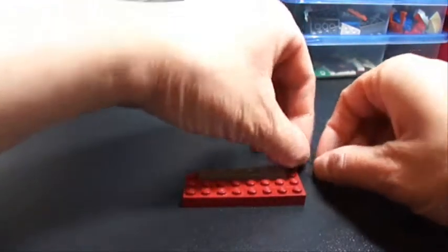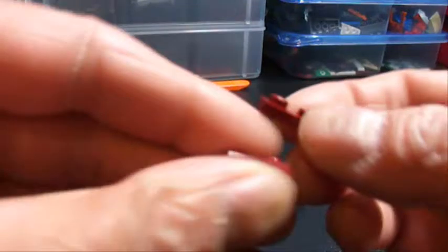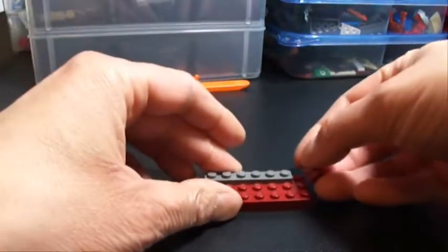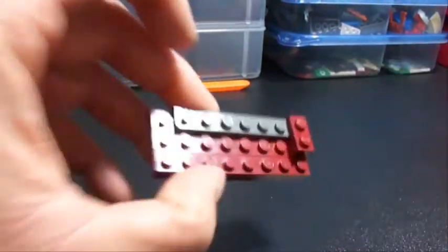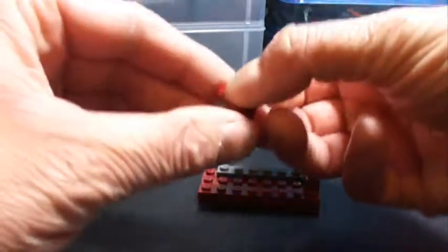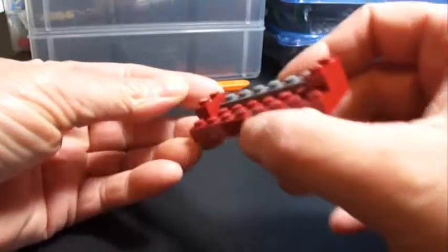Then we take two 1x2 plates, stack them on top of one another, put them on one side, and then we're going to do the same for the opposite side.